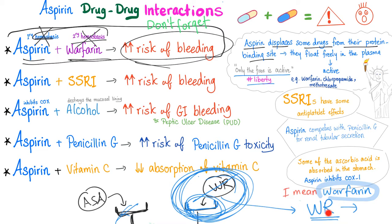Aspirin can also kick other drugs off their plasma proteins — such as chlorpropamide and methotrexate. Methotrexate can cause mucositis and bone marrow suppression. So if you have a patient with rheumatoid arthritis and you give them aspirin and methotrexate at the same time, don't be surprised if they develop mucositis, leukopenia, neutropenia, and increased risk of infection.